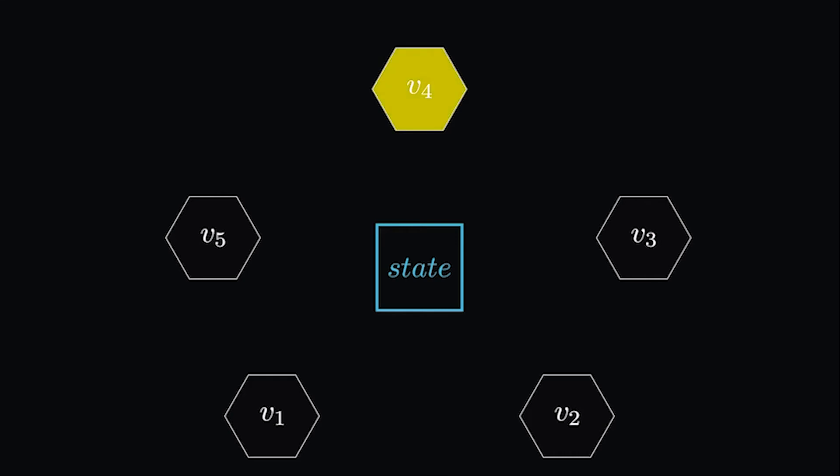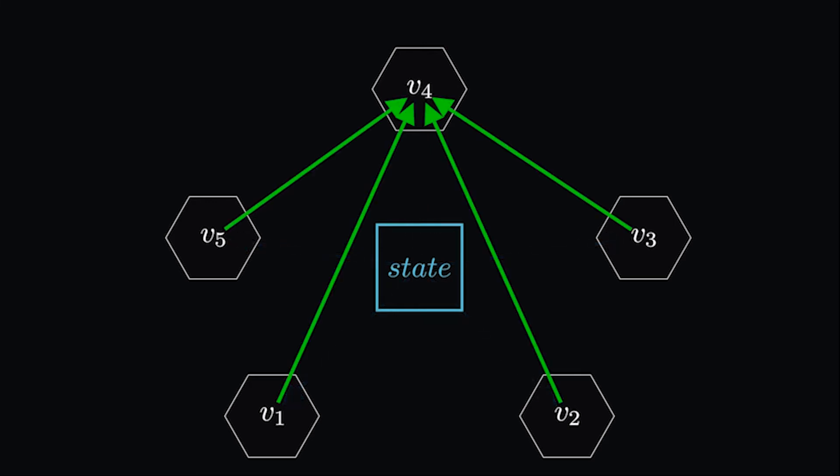In Solana's proof of stake mechanism, one lead validator at a time processes transactions and writes the network state. Other validators read the state, verify the transactions, and vote to confirm them.